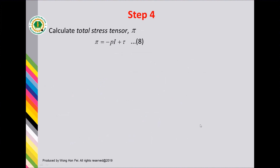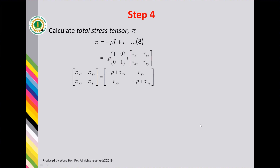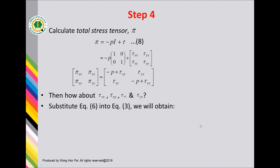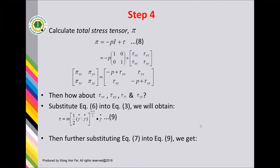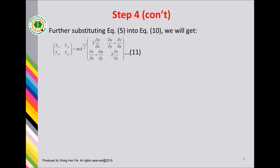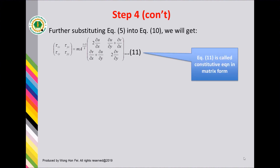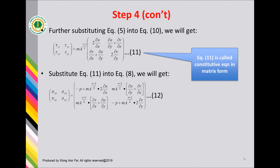Step four: calculate the total stress tensor, given by equation 8. To find tau xx, tau xy, tau yx, and tau yy: substituting equation 6 into equation 3 gives equation 9. Further substituting equation 7 into equation 9 gives equation 10. Further substituting equation 5 into equation 10 gives the stress tensor in matrix form as equation 11, also called the constitutive equation in matrix form. Substituting equation 11 into equation 8 gives the total stress tensor in matrix form, showing that pi xy equals pi yx, which equals tau xy, which equals tau yx.